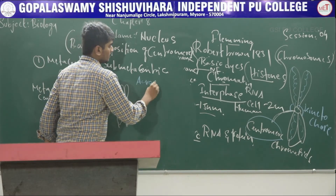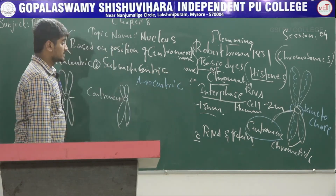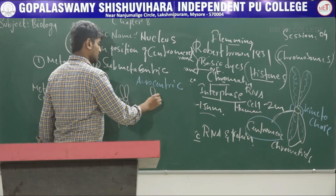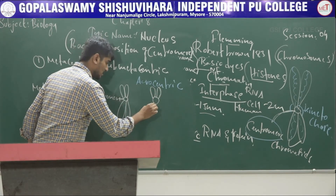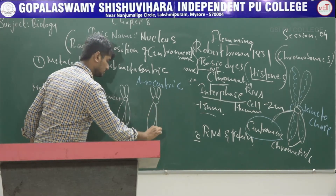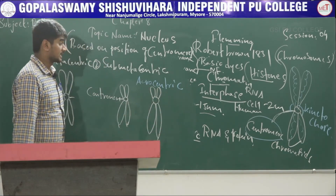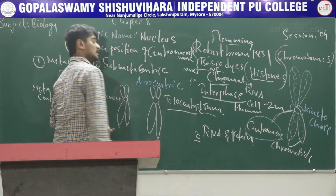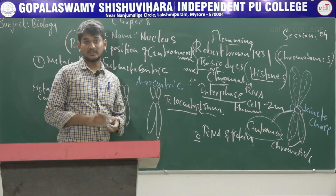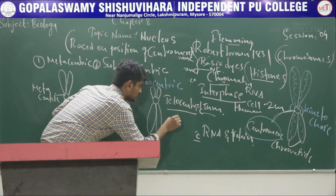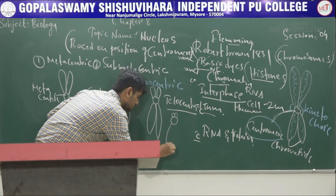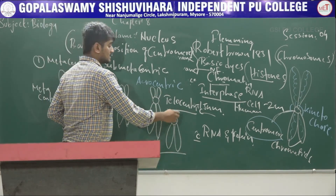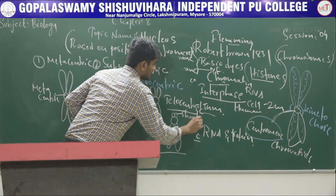The next one is acrocentric chromosome. In this chromosome, the centromere is present near the end of the chromosome, and here one arm is extremely short. This is called acrocentric. The next one is telocentric chromosome, where the centromere is located at the terminal part of the chromosome, showing one extremely short arm and one long arm.